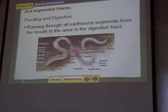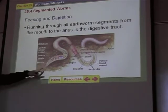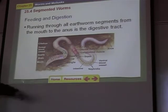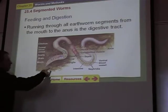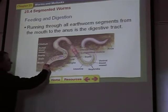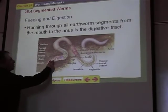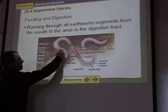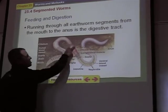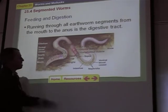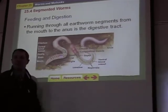This shows the digestive tract. You should probably memorize this order: mouth, pharynx — it's not showing the pharynx here, but there is one — then crop, gizzard, and then intestine going all the way down to the anus. That's the digestive system.